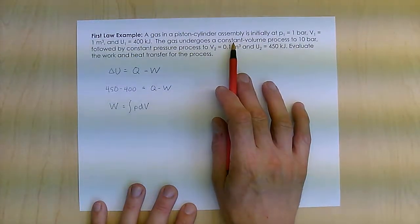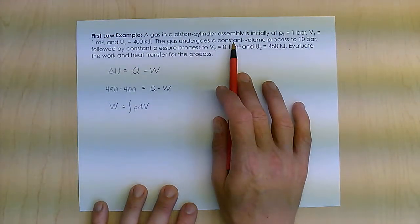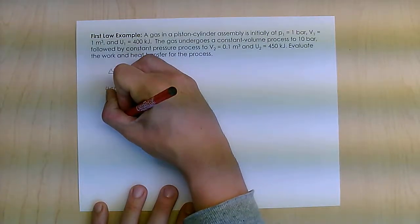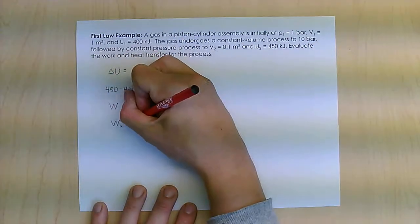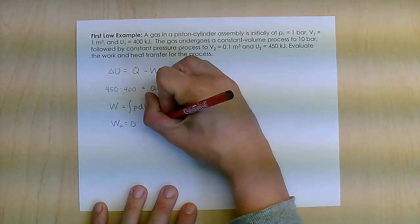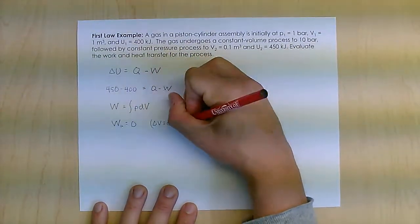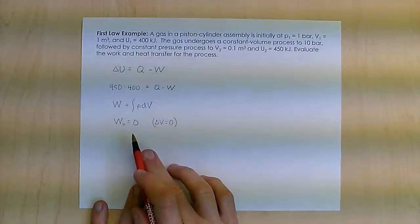For this process, I'll call that process A. The work of process A is zero because it's constant volume. Delta V equals zero, so that work is zero.